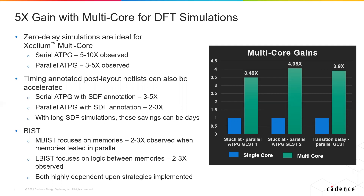Later in the design cycle, when you have layouts available and want to annotate those results back into your simulation via SDF, we can accelerate those simulations as well. Serial ATPG and parallel ATPG can both be accelerated, achieving 3 to 5x and 2 to 3x acceleration respectively. The annotation of delays causes events that were simultaneous in zero-delay to now be distributed at slightly unique times, resulting in slightly lower acceleration. However, with these long SDF simulations, a 2 to 3x speedup can still mean days of simulation time saved — significant savings with SDF-annotated netlists.